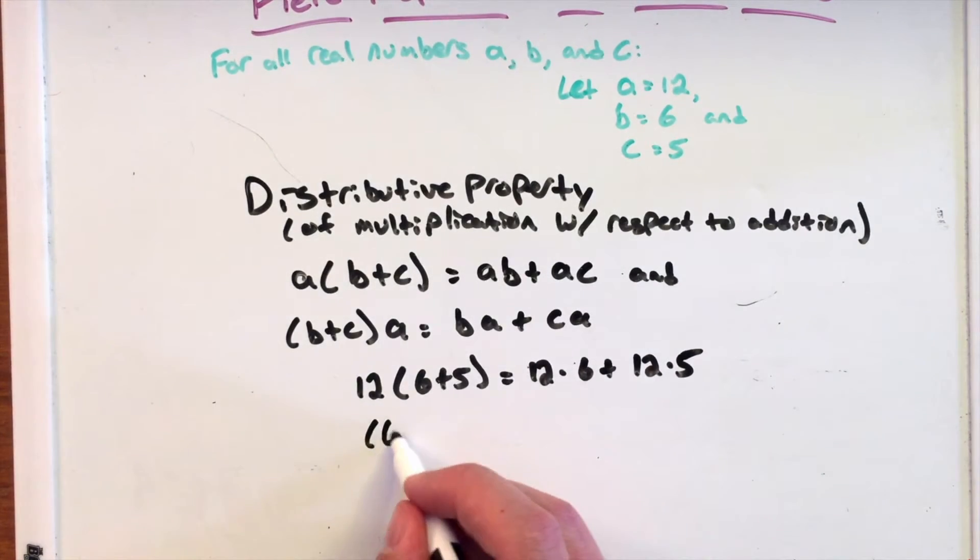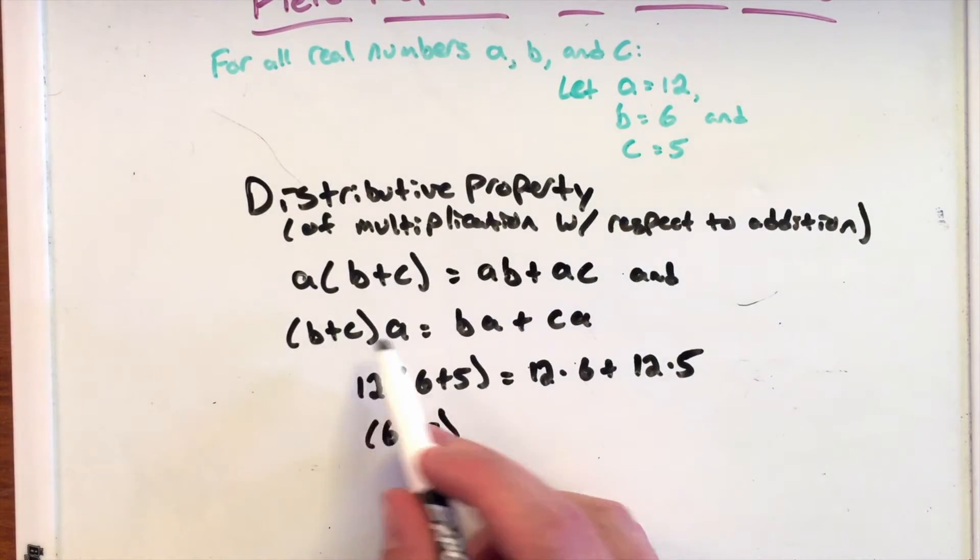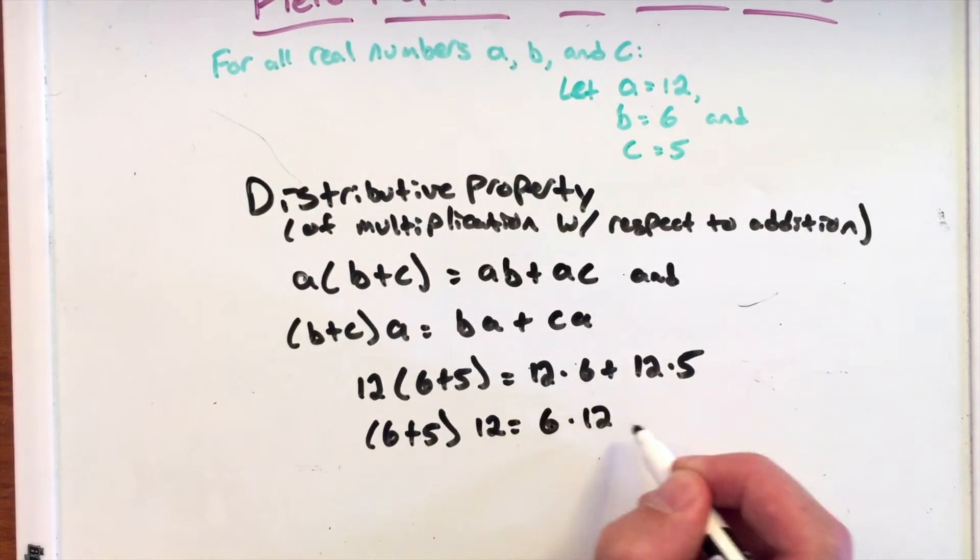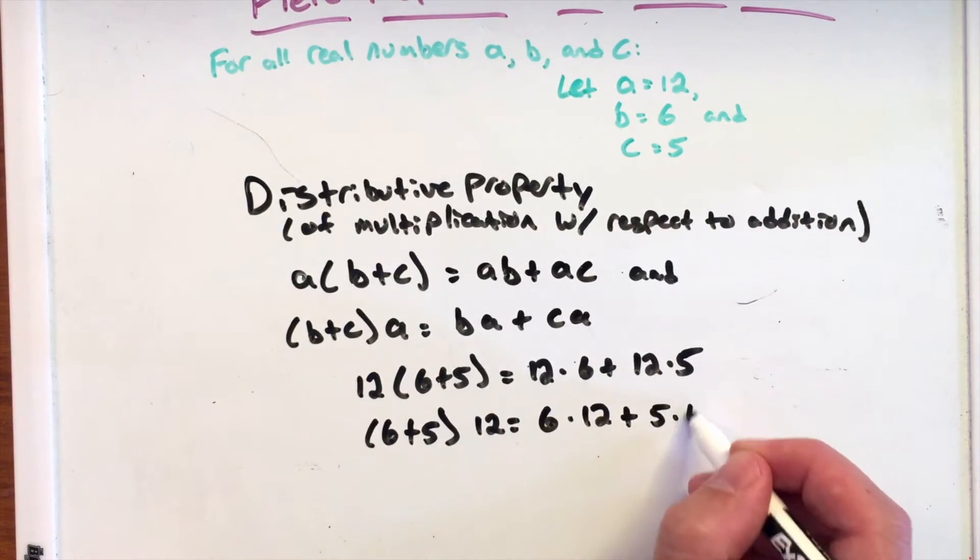Also, the same thing as saying 6 plus 5, for this one, B plus C times A, which is 12, equals 6 times 12 plus 5 times 12.